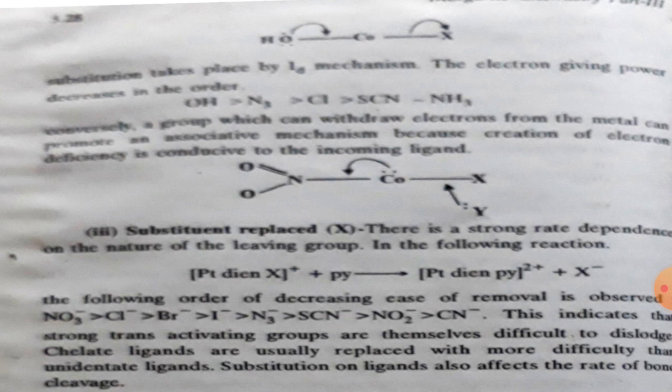If the ligand's electron donor ability is less, then dissociative mechanism is less favored and substitution occurs by I-D mechanism. Here we have ordered the ligands based on their electron donating ability, as shown in the figure.